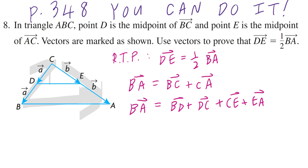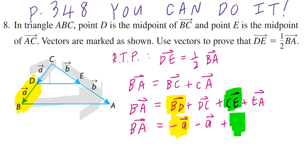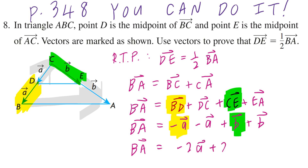Now, going back to the given values and highlighting them: vector BD equals negative vector A. Likewise, vector DC also equals negative vector A. Vector CE is going to be the same as vector B, and vector EA is also going to be vector B. We know this because we're given the midpoints and how they're equal. So collecting like terms, vector BA equals negative 2A plus 2 times vector B.